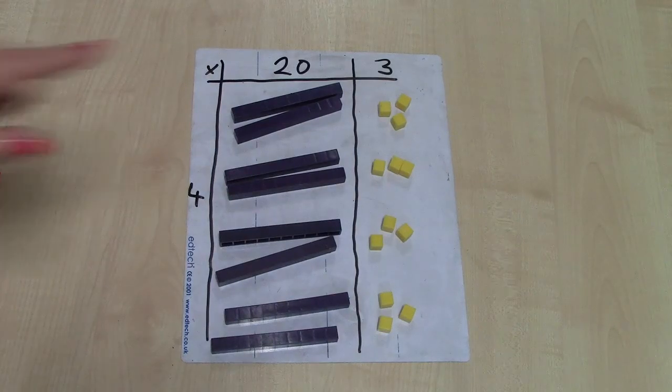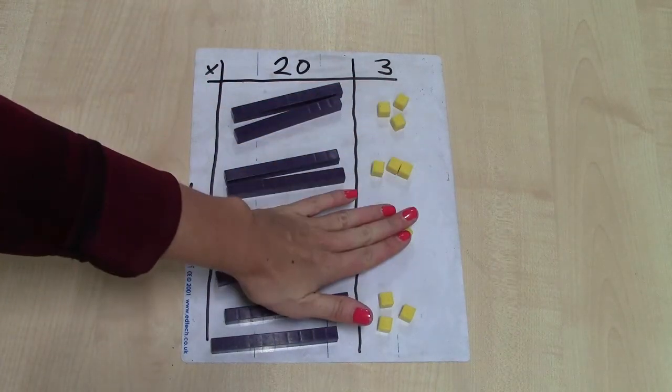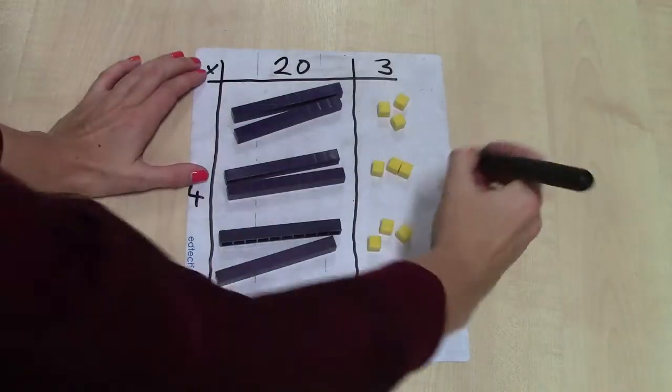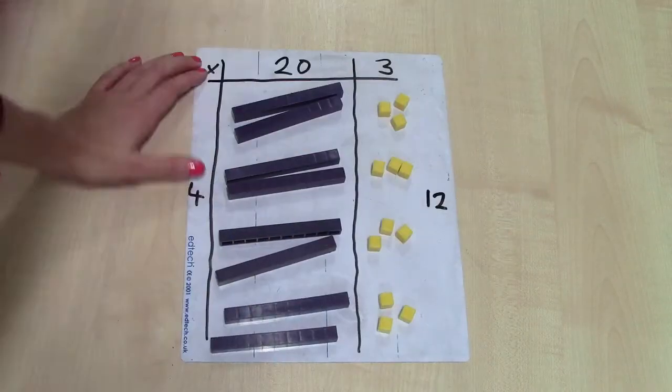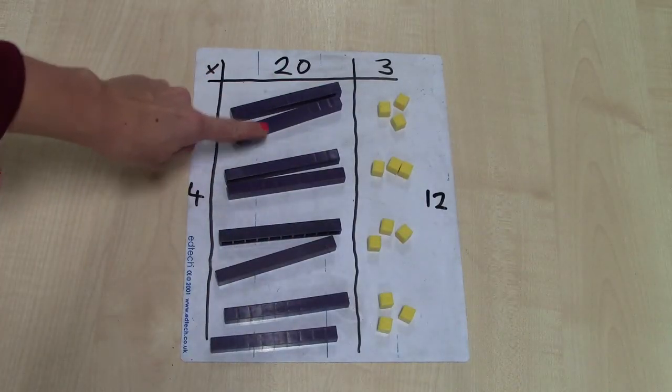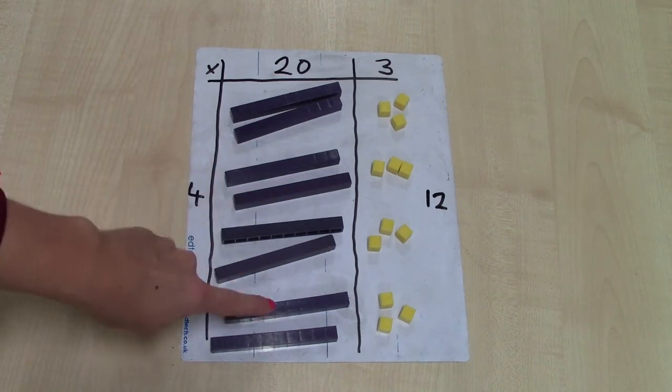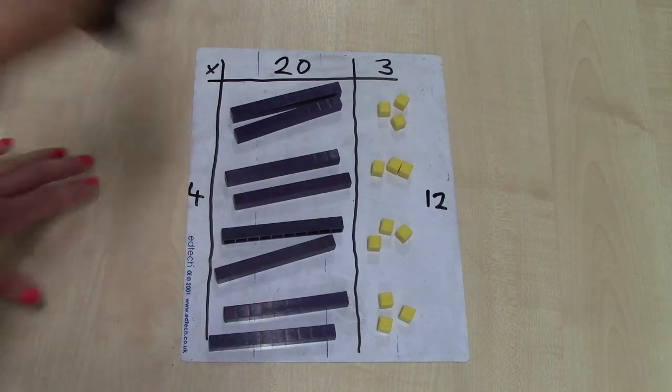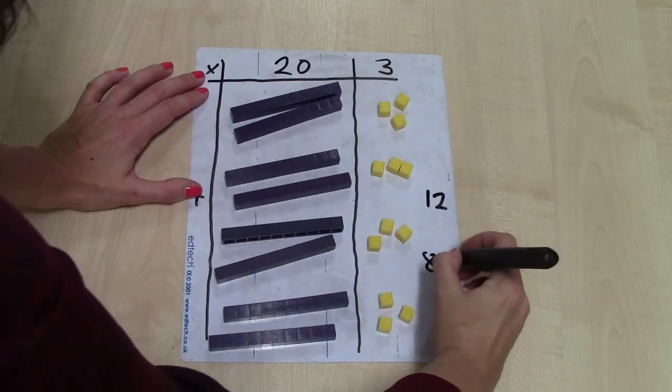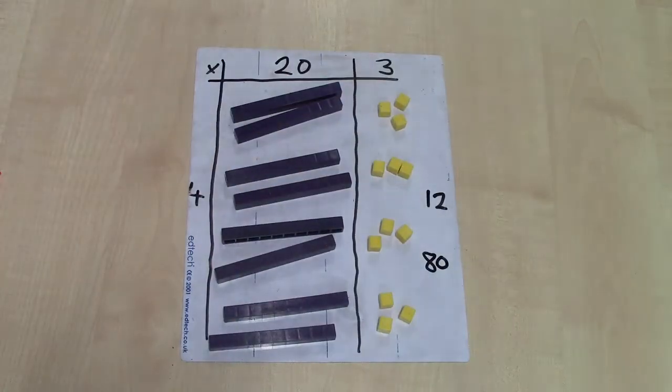So I've got 3, 6, 9, 12. And I've got 10, 20, 30, 40, 50, 60, 70, 80. So I've got 80 and 12.